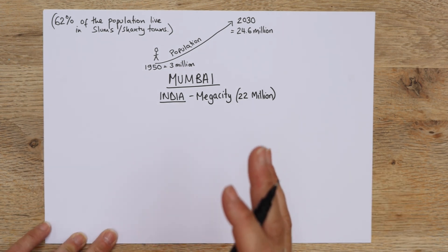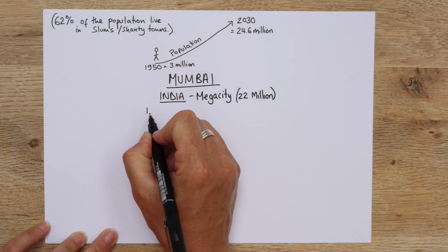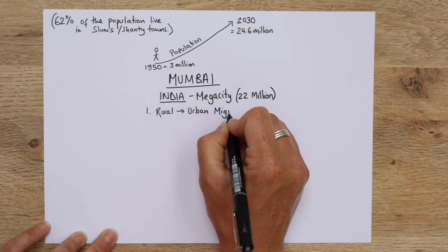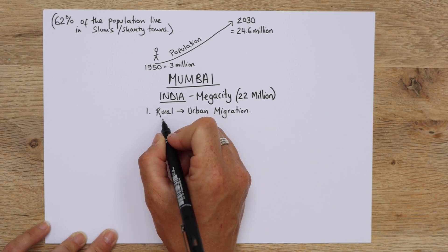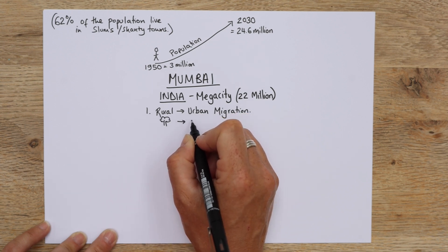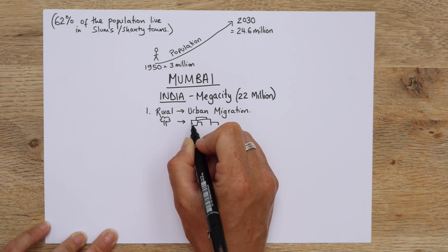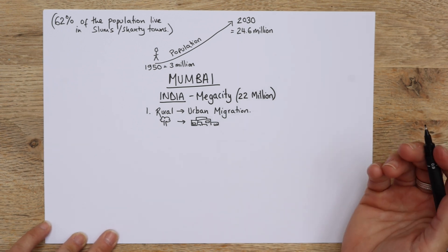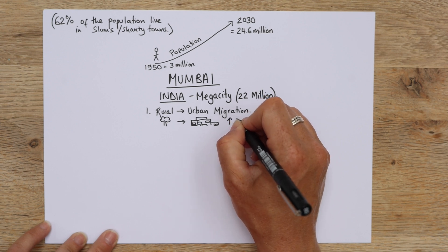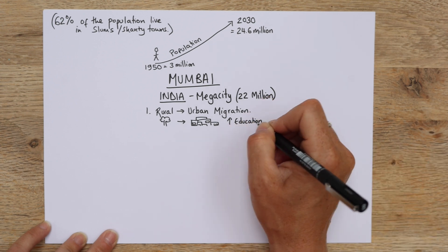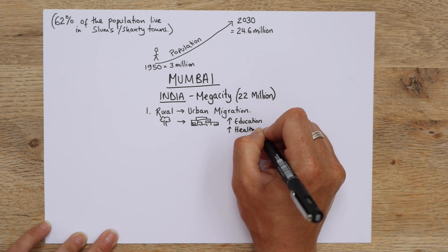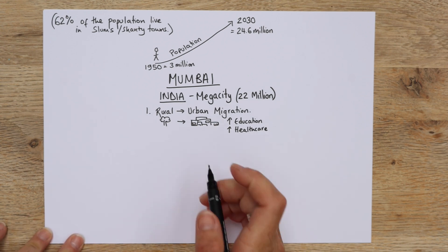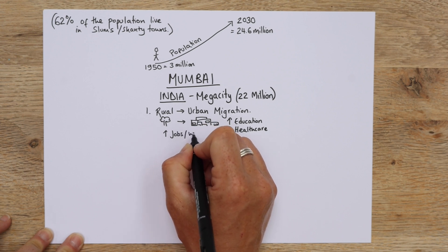You might ask yourself why — well there are two reasons. The first is what we call rural to urban migration, and it is exactly as it sounds: people coming from the countryside to the cities. They're coming for lots of reasons, but the main ones are better education — more chance of getting children into school — better healthcare, so if you're sick you've got more chance of seeing a doctor, and more chance of jobs and building up some wealth.